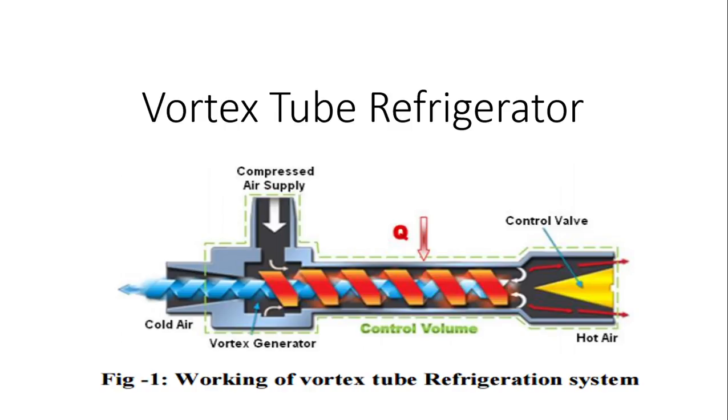Now, this is a vortex tube generator. Mainly, you have compressed air coming like this, which is already compressed by using some external compressor. Now, that compressed air enters here. This portion is the vortex generator. This portion generates a vortex flow. This compressed air undergoes, when it passes through this vortex generator, it will undergo a vortex flow.